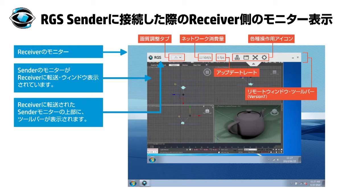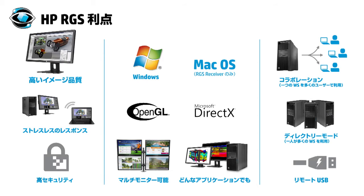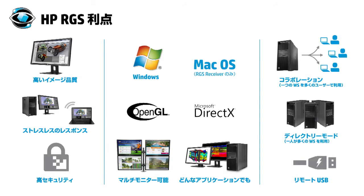センダー画面上部にはRGSのツールバーが表示されていますが、設定で非表示にすることもできます。HP RGSはワークステーションのアプリケーションデータを転送しているわけではありません。モニターに表示される画面のピクセルデータだけを圧縮・暗号化して転送しているため、他のデスクトップ遠隔操作ツールと比較してネットワークへの負荷も軽くデータの漏洩のリスクもありません。